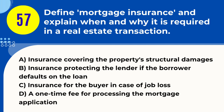Question 57. Define mortgage insurance and explain when and why it is required in a real estate transaction. A. Insurance covering the property's structural damages. B. Insurance protecting the lender if the borrower defaults on the loan. C. Insurance for the buyer in case of job loss. D. A one-time fee for processing the mortgage application. Answer: B. Explanation. Mortgage insurance is a type of insurance policy that protects the lender in case the borrower defaults on their mortgage loan. It is typically required when the borrower makes a down payment less than 20% of the property's value, as it poses a higher risk to the lender.